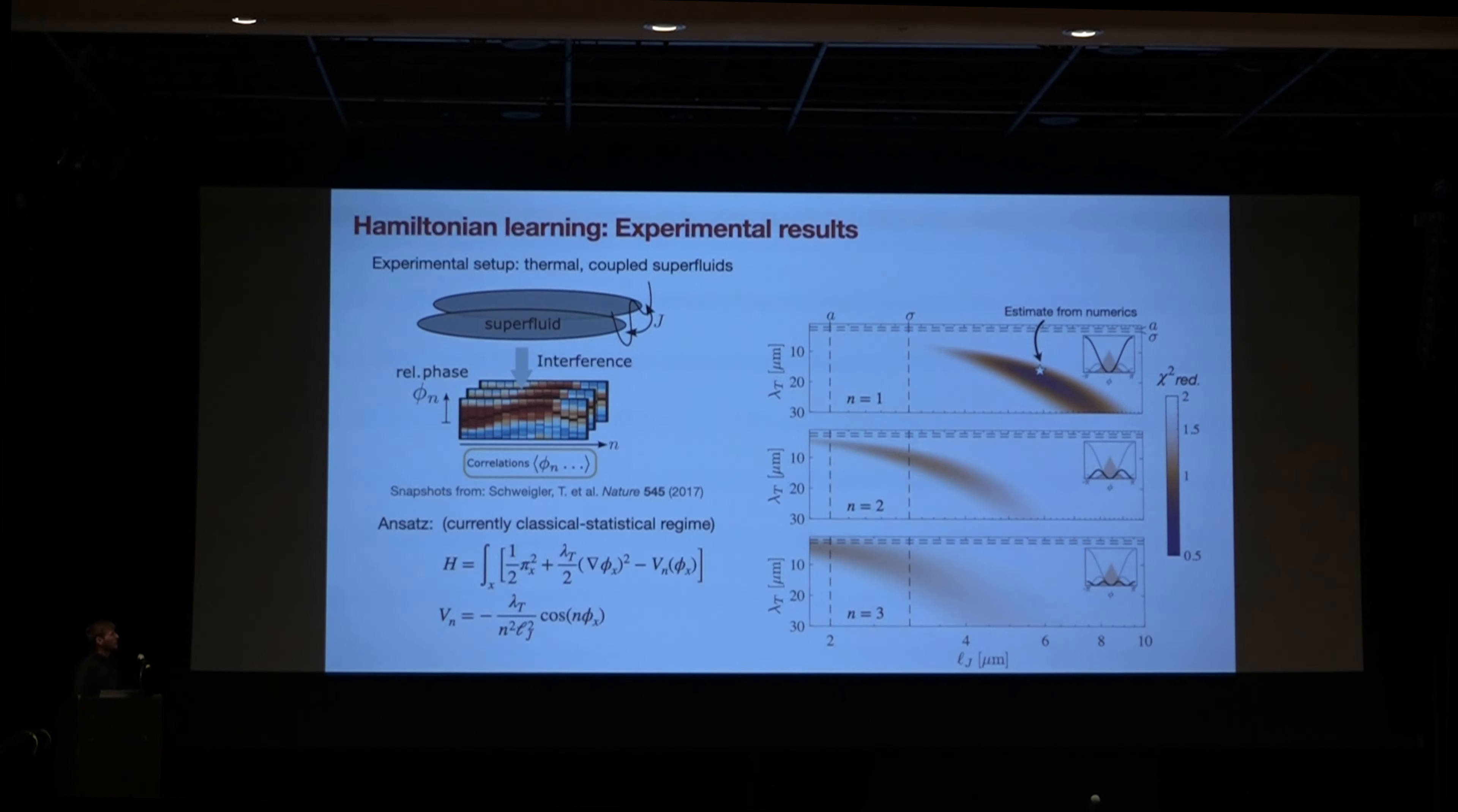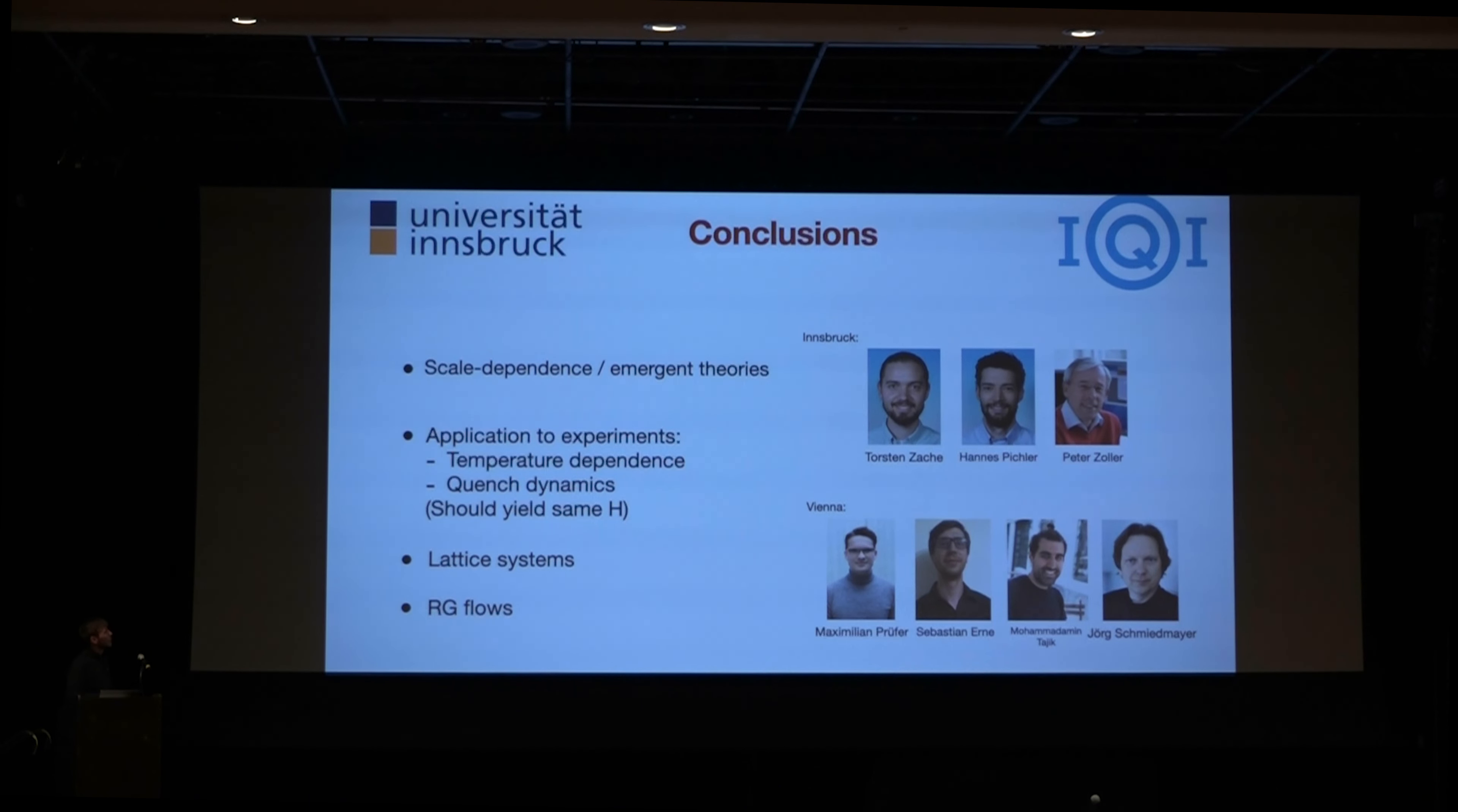And so with that, we can kind of confirm that the data is indeed somehow consistent with the sine-Gordon theory for the input data that we have. So with this, let me briefly thank the people involved, both in Innsbruck and in Vienna, and have a few short conclusions. So first, I think we have a scheme here to somehow probe the emergence of field theories in a controlled scale. In fact, it would be interesting in future experiments to somehow tune the resolution scales and see how different theories can emerge for different resolutions.